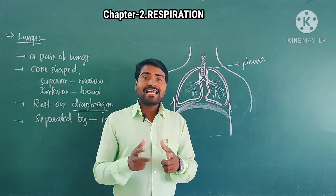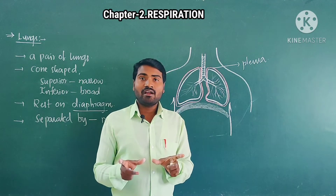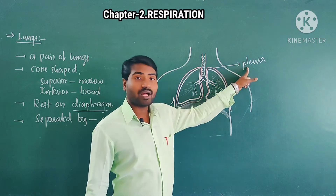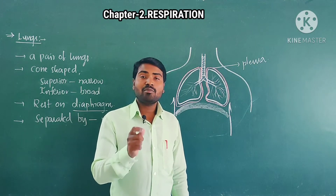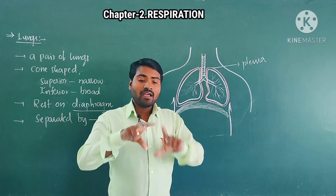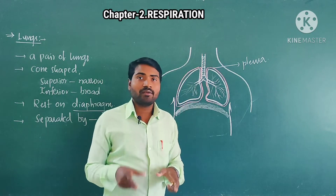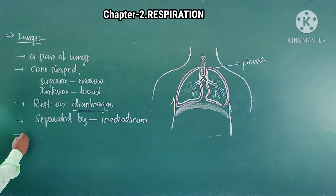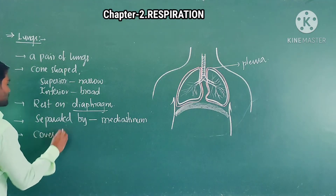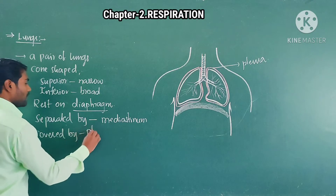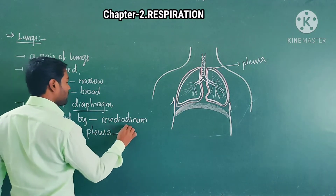These lungs get protected by an outermost covering. The outermost covering of the lung is known as pleura — a double membranous layer called pleura, which gives protection to the lungs. The lungs are covered by pleura, and this pleura is filled with pleural fluid.